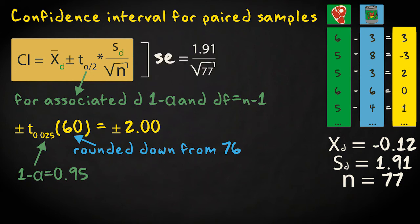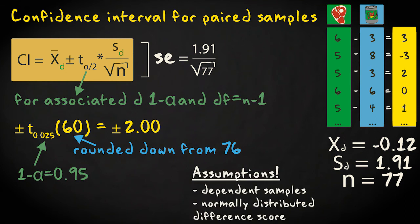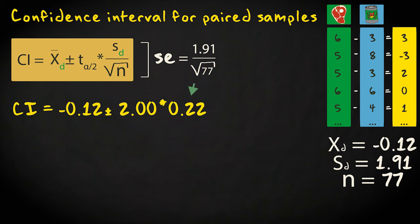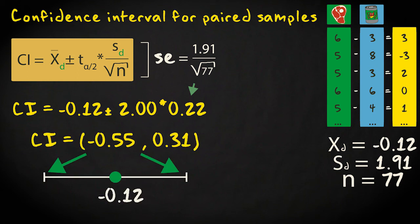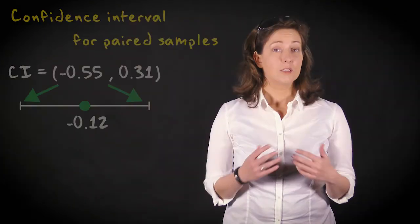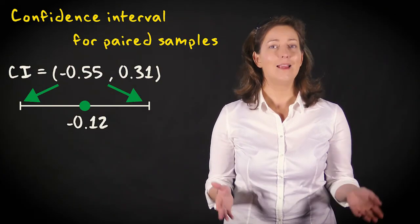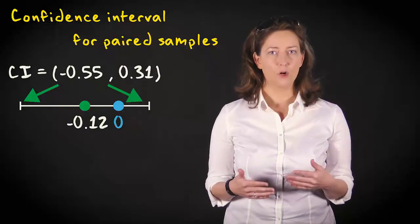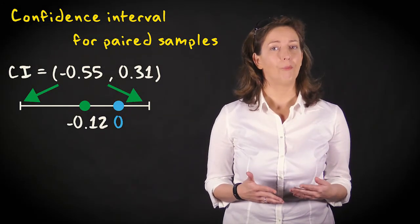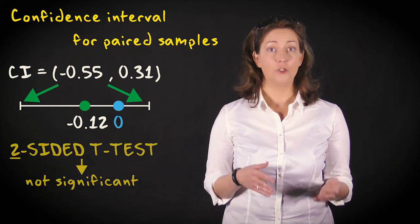The standard error is calculated the same way as before. Remember that we need to meet the same assumptions required for a two-sided t-test. The confidence interval for our example data is minus 0.12 plus and minus 2.00 times 0.22, which results in a confidence interval ranging from minus 0.55 to 0.31. Since the value 0 — no difference in the means — lies inside the interval, 0 is considered a plausible value. This means that if we had performed a two-sided test, it would also have been non-significant.